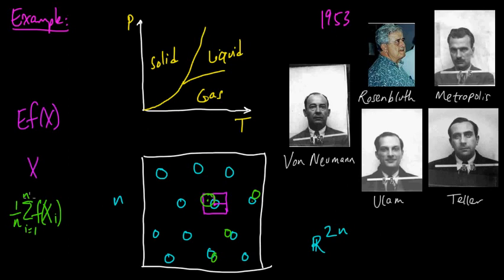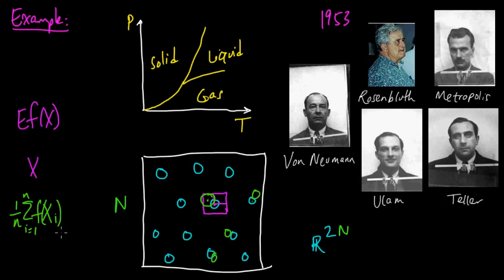A note on notation: n here is the number of iterations, while I was using n for the number of particles — let's call that capital N. The reason it turns out to be a good approximation of the true mean, when set up correctly, is from what's called the Ergodic Theorem for Markov Chains, which we'll look at in another video.